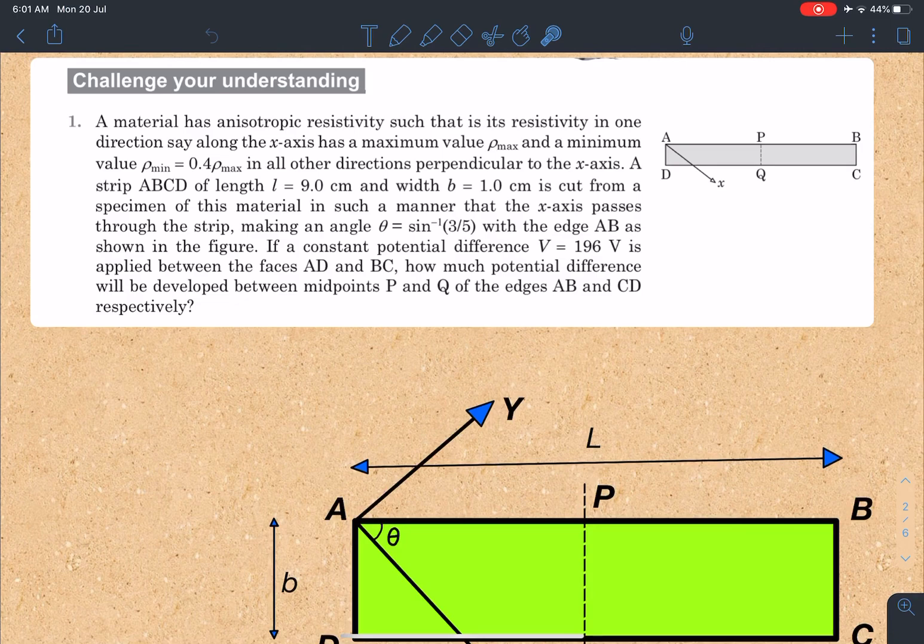If a constant potential difference is applied between faces AD and BC, so a battery is connected across these two terminals, how much potential difference will be developed between midpoints P and Q of the edges? These are the two points here, we have to find out how much is the potential difference between these two points.